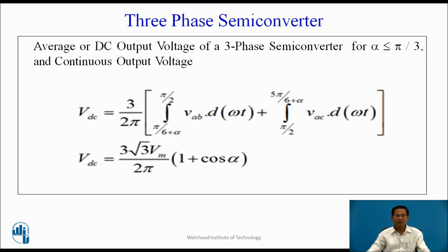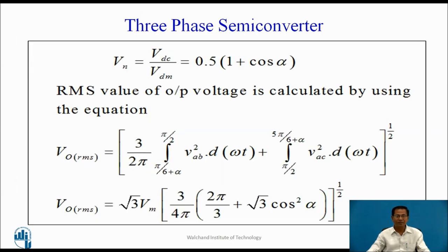Vdc = (3/2π) [∫(π/6+α to π/2) Vab d(ωt) + ∫(π/2 to 5π/6+α) Vac d(ωt)]. After solving this, we obtain Vdc = (3√3 Vm / 2π)(1 + cos α). Vdm is the maximum average DC output voltage. When α = 0, Vdc = Vdm. So the normalized output is Vdc/Vdm = 0.5 × (1 + cos α).